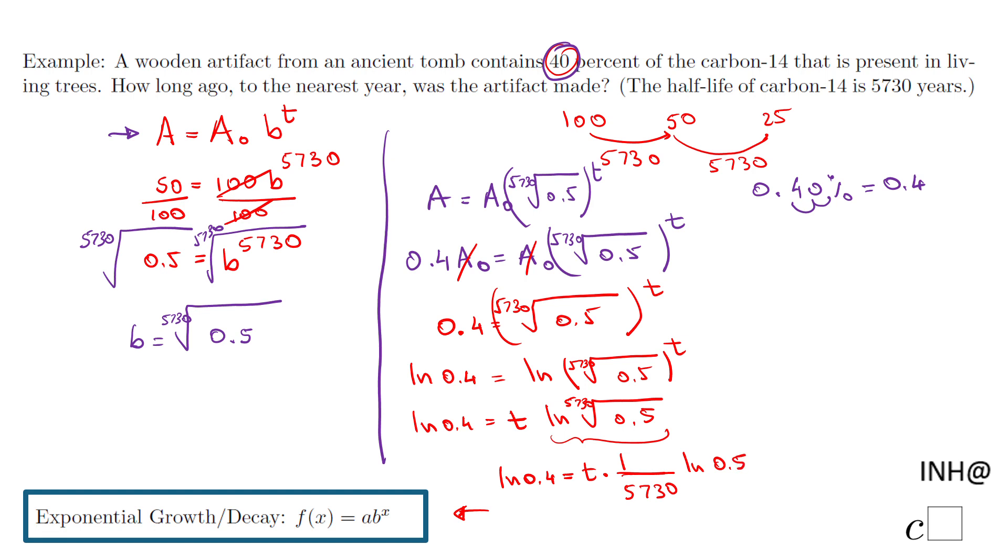Now we're going to solve for t. Basically, you want to multiply by 5730 and divide by natural log of 0.5. So t will be 5730 × ln(0.4) / ln(0.5). This is the exact value.